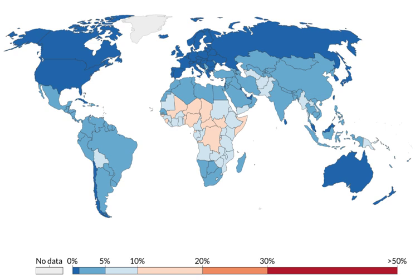Huge disparities in under-5 mortality rates exist globally. The risk of a child dying in the country with the highest under-5 mortality rate is about 60 times higher than in the country with the lowest. Sub-Saharan Africa remains the region with the highest under-5 mortality rates; all six countries with rates above 100 deaths per 1,000 live births are in Sub-Saharan Africa. Approximately 80% of under-5 deaths occur in only two regions: Sub-Saharan Africa and South Asia. Six countries account for half of global under-5 deaths: India, Nigeria, Pakistan, the Democratic Republic of the Congo, Ethiopia, and China. India and Nigeria alone account for almost a third of global under-5 deaths.